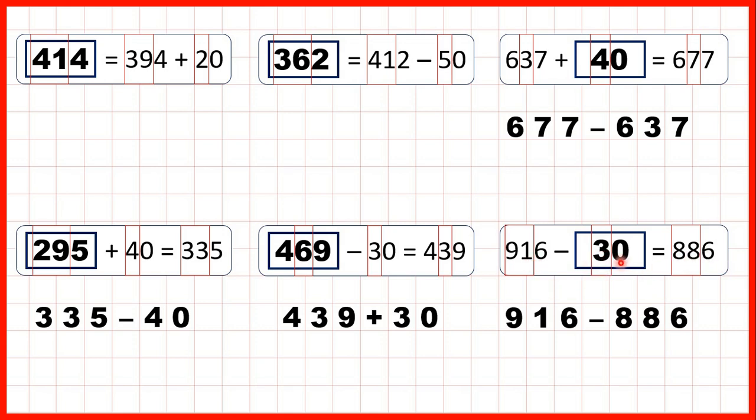And then our ones digit needs to be a zero, because if we have six ones and don't take any away, we'll still have six ones in our answer.